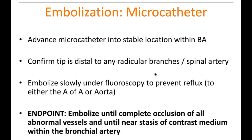We embolize with a microcatheter. Once in position in the irregular bronchial artery, advance the microcatheter to a very stable location. If you can see the spinal artery and plan to continue embolization, confirm the microcatheter tip is distal to any branches supplying the artery of Damkowitz. Embolize slowly under fluoroscopy the entire time to prevent reflux into the spinal artery or aorta. The endpoint is complete occlusion of all abnormal vessels and near stasis of contrast within the bronchial artery.